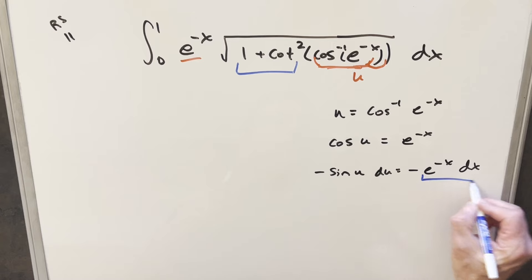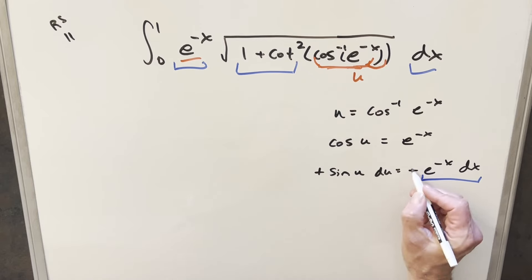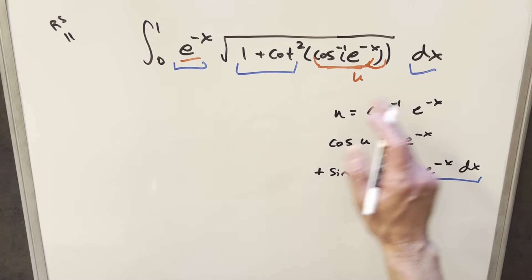But now for this e minus x dx, I have this right here and here. I can actually just multiply by minus one here on both sides to just get rid of these minus signs. And so now we can say that this e minus x dx is going to be exactly sine u du.